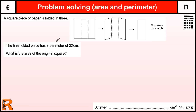If we're told that this piece of paper is folded three times to give this final shape, and that shape has a perimeter of 32, what's the area of the original square? The key thing to do here is to realize that if I call this length A, then this length down the side here is three lots of that — so this length here is three times this one because it's been folded in three.